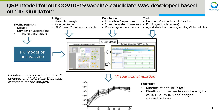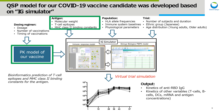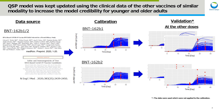Therefore, a QSP model for our COVID-19 vaccine candidate was developed based on the IG simulator by adding information specific to our vaccine. After that, virtual clinical simulation was performed. In the analysis, we evaluated IgG level as an efficacy biomarker, because it has been reported that there is a positive relationship between binding IgG and vaccine protection. In addition, the QSP model was kept updated using clinical data from other vaccines of similar modality to increase model credibility for younger and older adults.